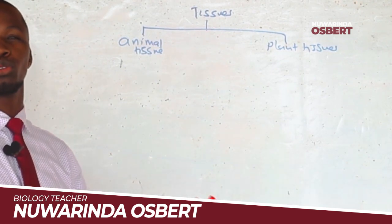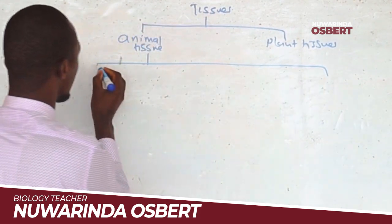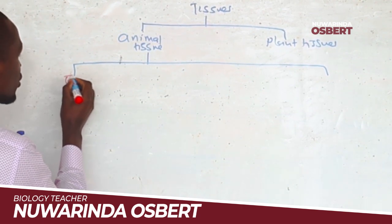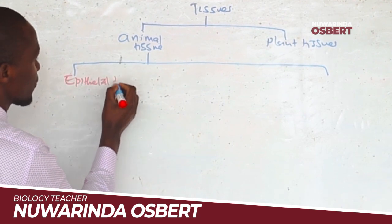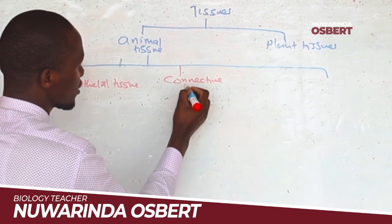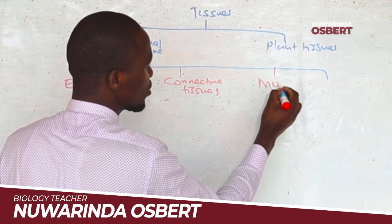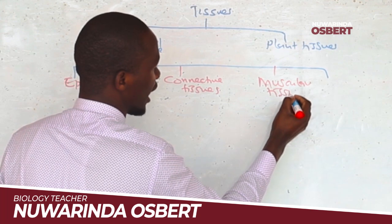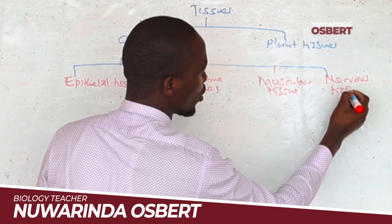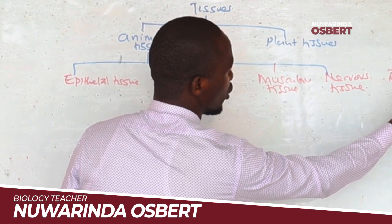We were also able to learn that animal tissues are of different types. Those types were: epithelial tissues, connective tissues, nervous tissue, and reproductive tissue.